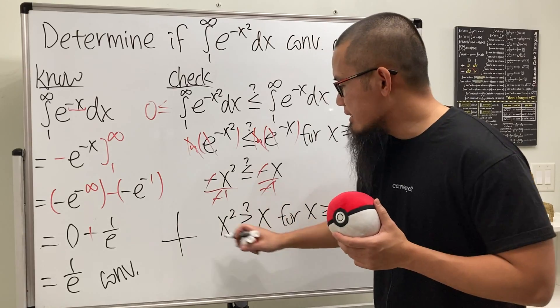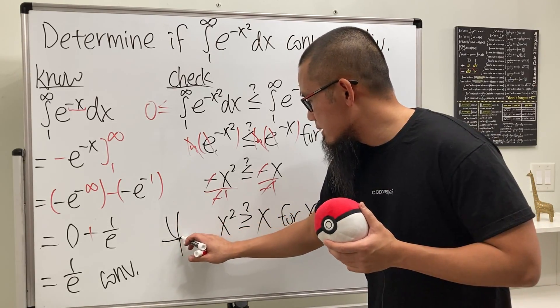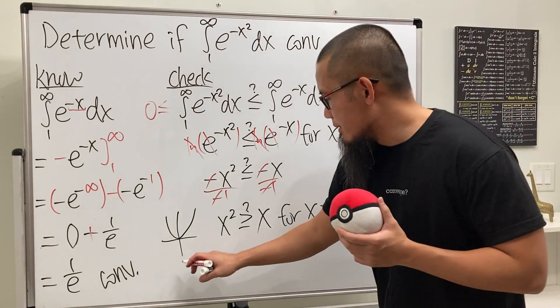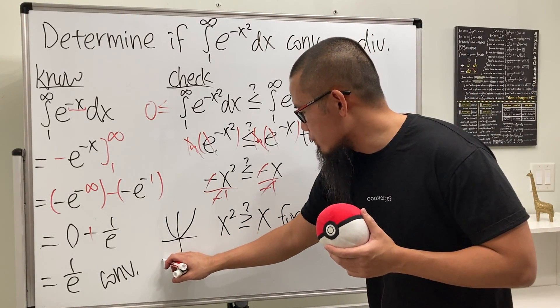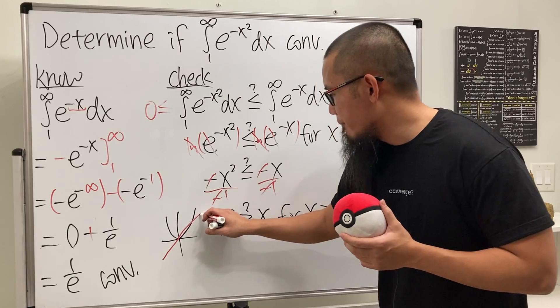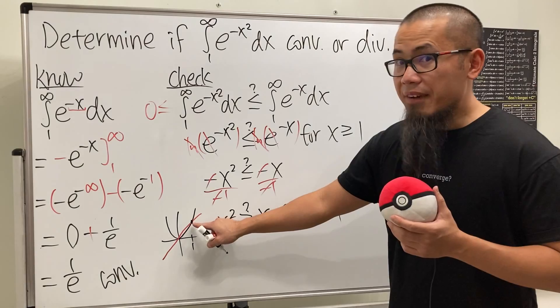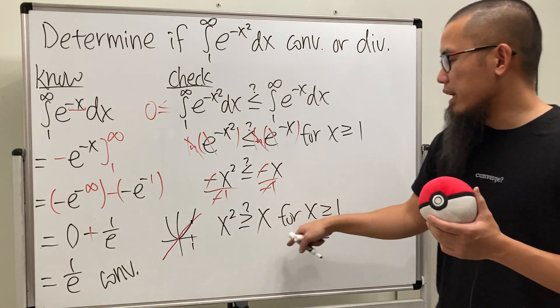You can look at the graph real quick. x squared looks like this. And then, when we have greater than or equal to x, so we are looking at the graph of x, which is like that. In fact, the intercept at 1, but after 1, x squared will be bigger than x, and it will never come back down, of course.